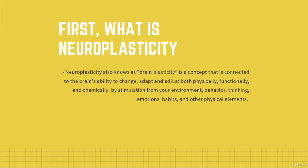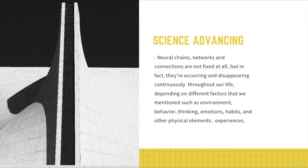Researchers discovered that the entire brain's structure, function, and chemical structure can not just change, but also adapt to environments and situations and adjust itself. Moreover, they discovered that this does not just happen by the influence of the surrounding environment, but also behavior traits, the way of thinking, emotions, habits, and other physical elements can play detrimental roles when it comes to the brain's plasticity.